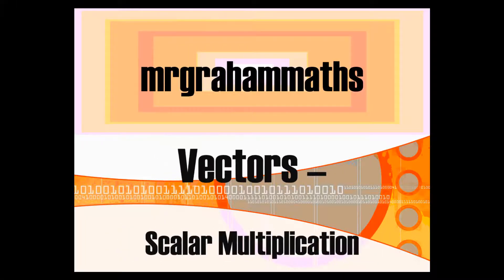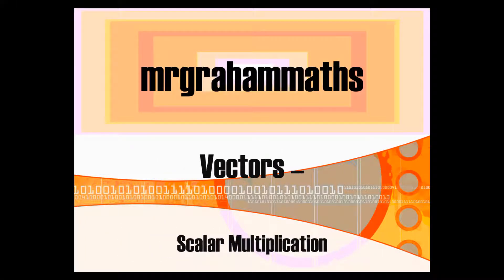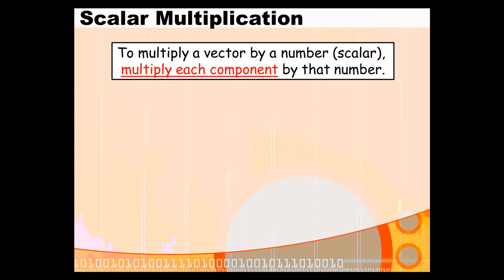In this video, we're going to look at what effect multiplying by a scalar has on a vector. Now, a scalar is just a number, so when you're multiplying a vector by a scalar or by a number, quite simply, you multiply each component in that vector by the number.